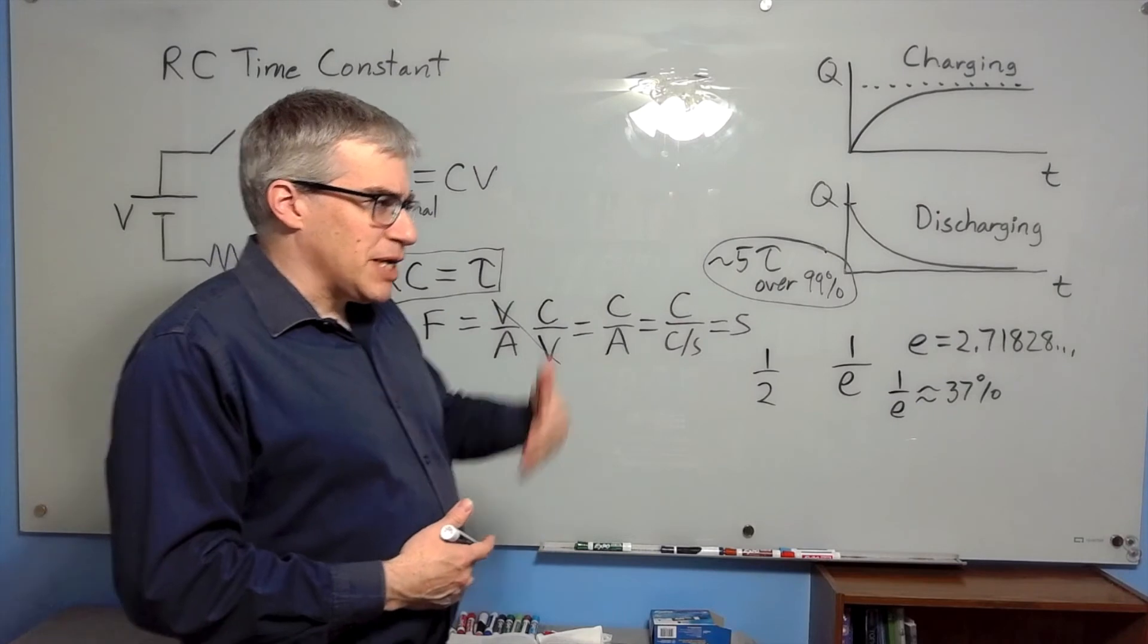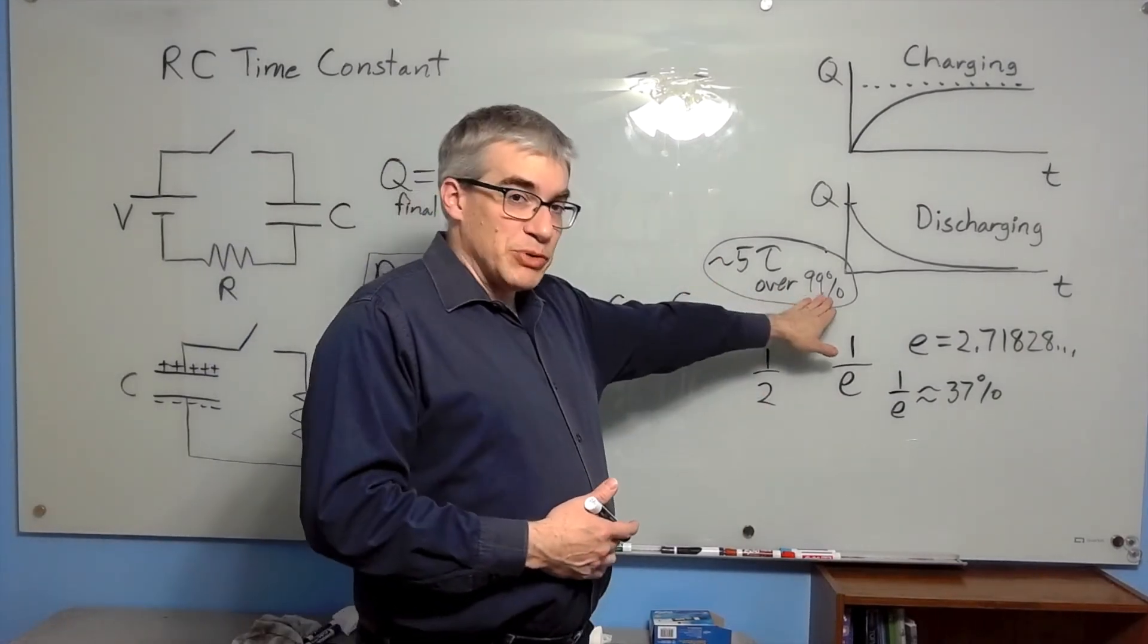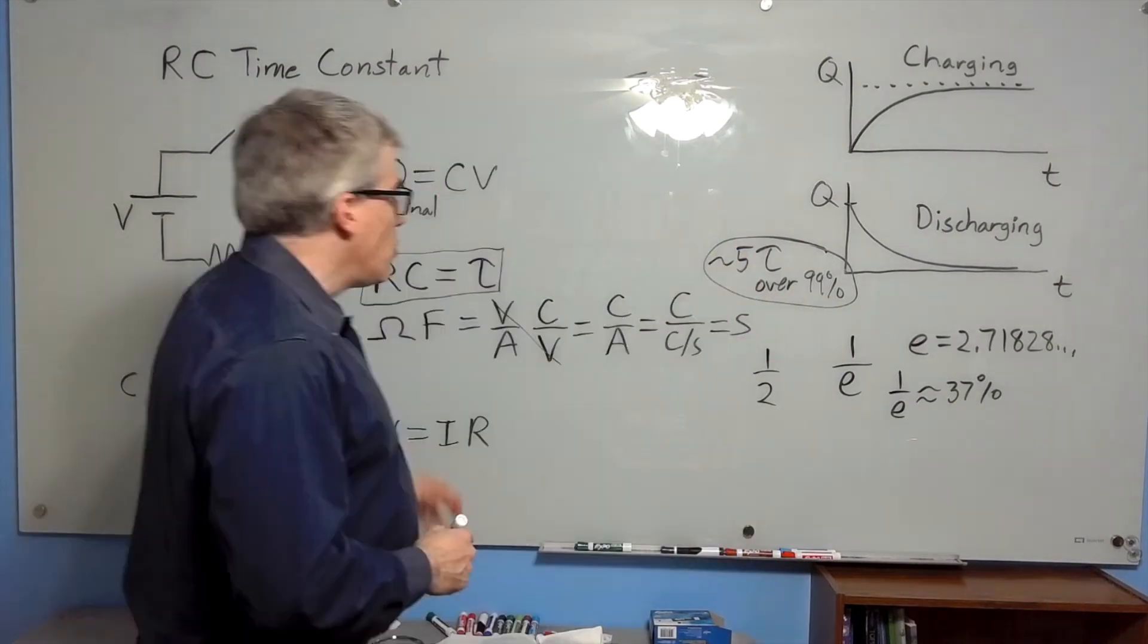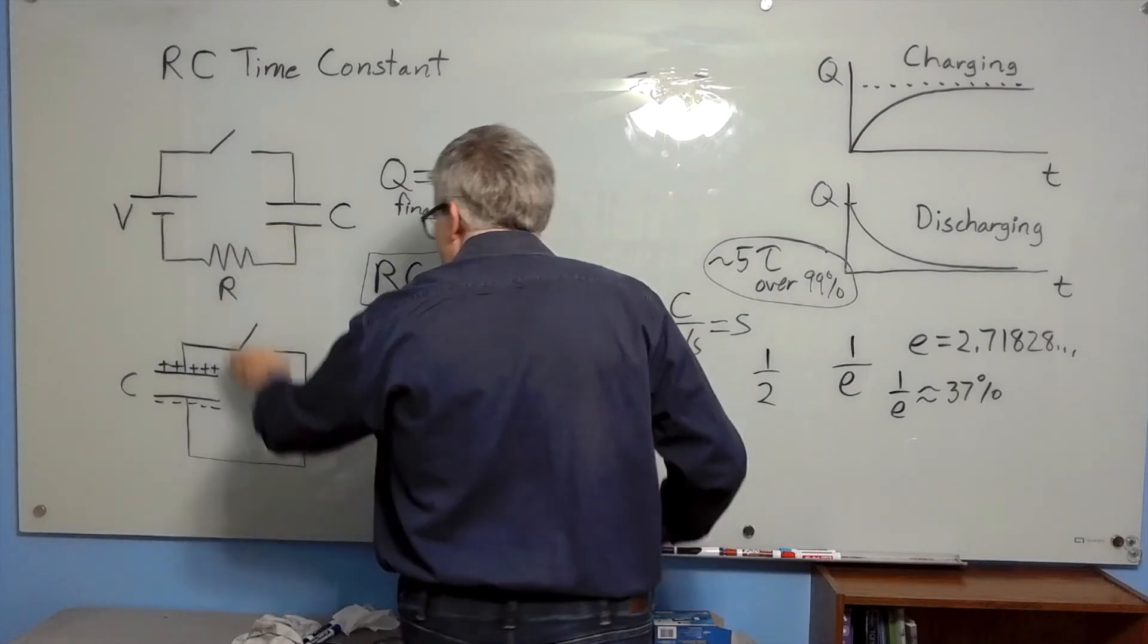If you complete 63 percent and then do it again and do it again five times, that puts you over 99 percent. And so 5 tau, we call it mostly full or mostly discharged, depending on whether you're using a charging circuit or discharging circuit.